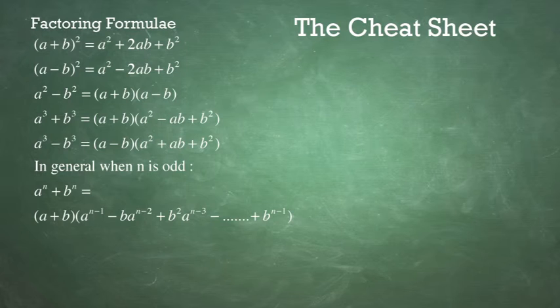In general, if N is an odd number—3, 5, 7, 9, etc.—then A to the N plus B to the N equals A plus B times A to the N minus 1 minus BA to the N minus 2 plus B squared A to the N minus 3, and so on, plus B to the N minus 1. What I want you to notice here is that the first term is A plus B, and in the second term, the signs alternate plus, minus, plus, minus, until the last term is plus B to the N minus 1.